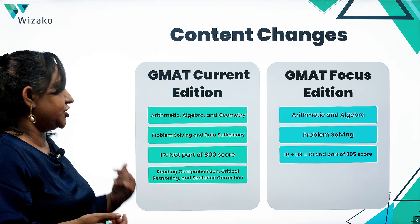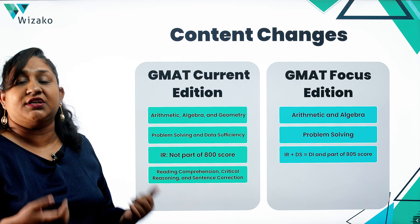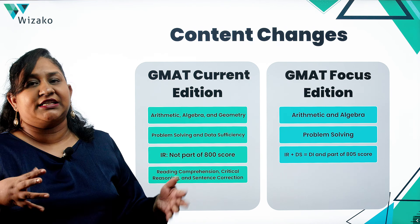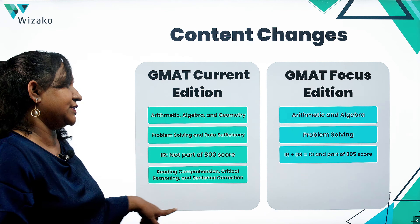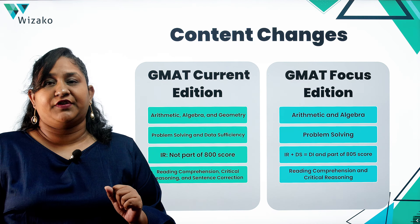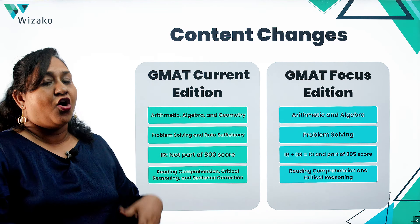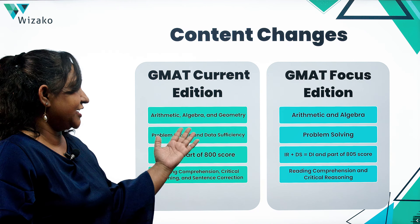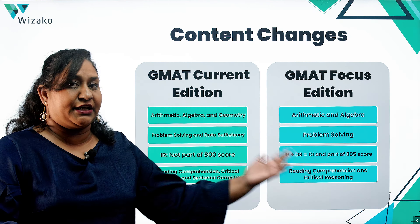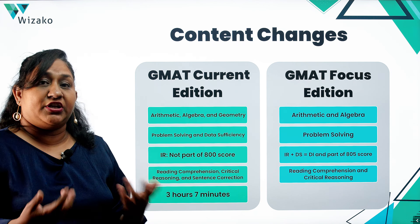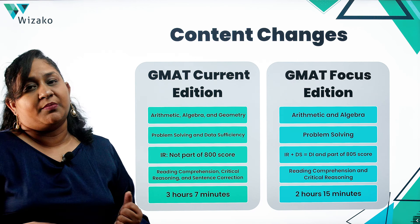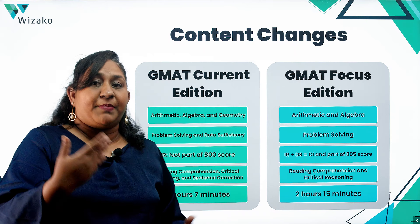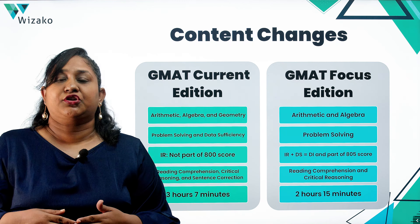IR is becoming much more important in the Focus Edition. In Verbal, the current edition has three question types: Reading Comprehension, Critical Reasoning, and Sentence Correction. Sentence Correction, which tests grammar and sentence construction, is being removed — you will only have Reading Comprehension and Critical Reasoning. The essay section present in the current edition is also being removed, so the test is going from three hours to just over two hours.